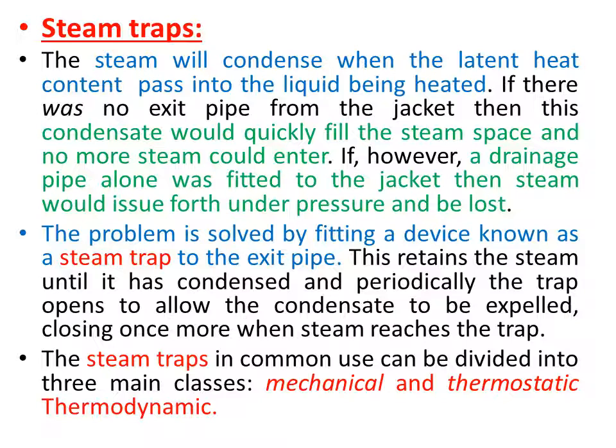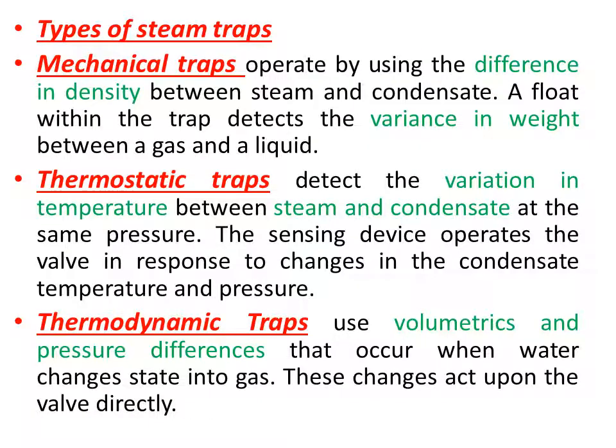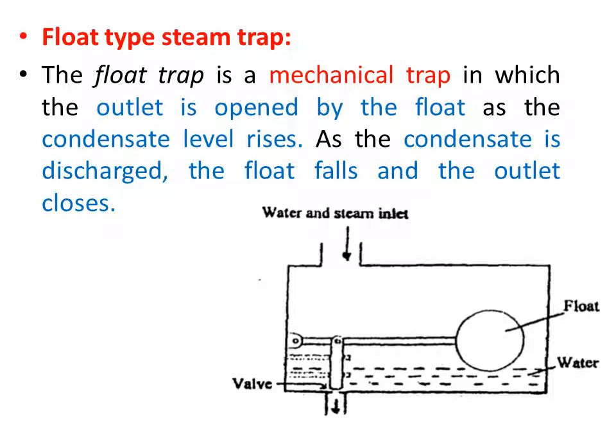The steam trap closes once more when steam reaches the trap. The steam trap has three types: mechanical, thermostatic, and thermodynamic. Mechanical traps operate by using the difference in density between the steam and the condensate. Thermostatic traps detect the variation in temperature between steam and the condensate. Thermodynamic steam traps use the barometric and pressure difference between steam and the condensate.